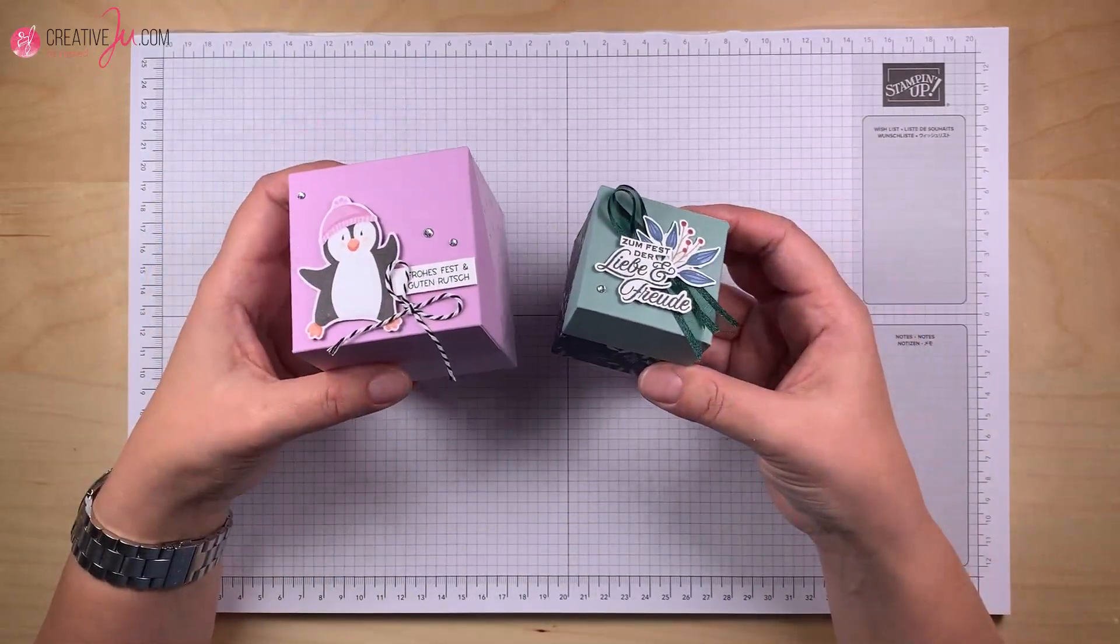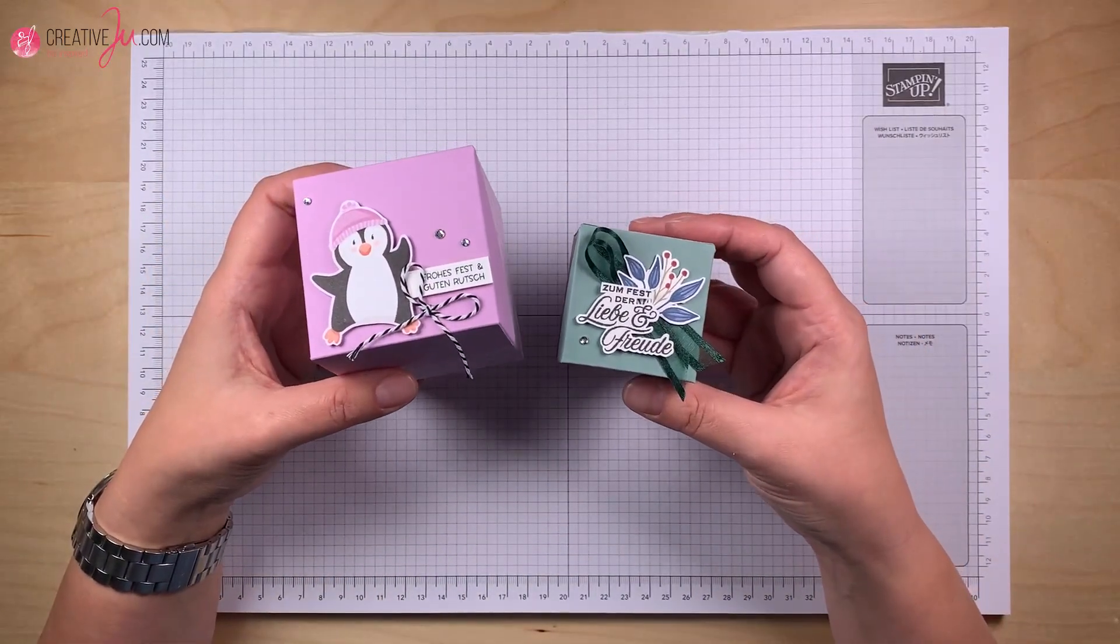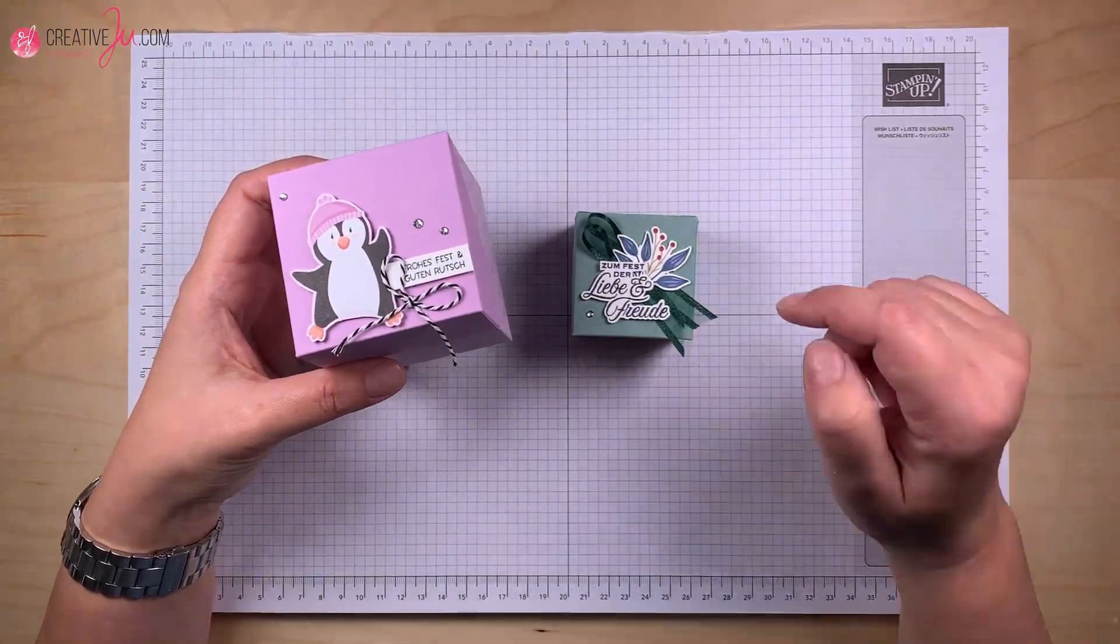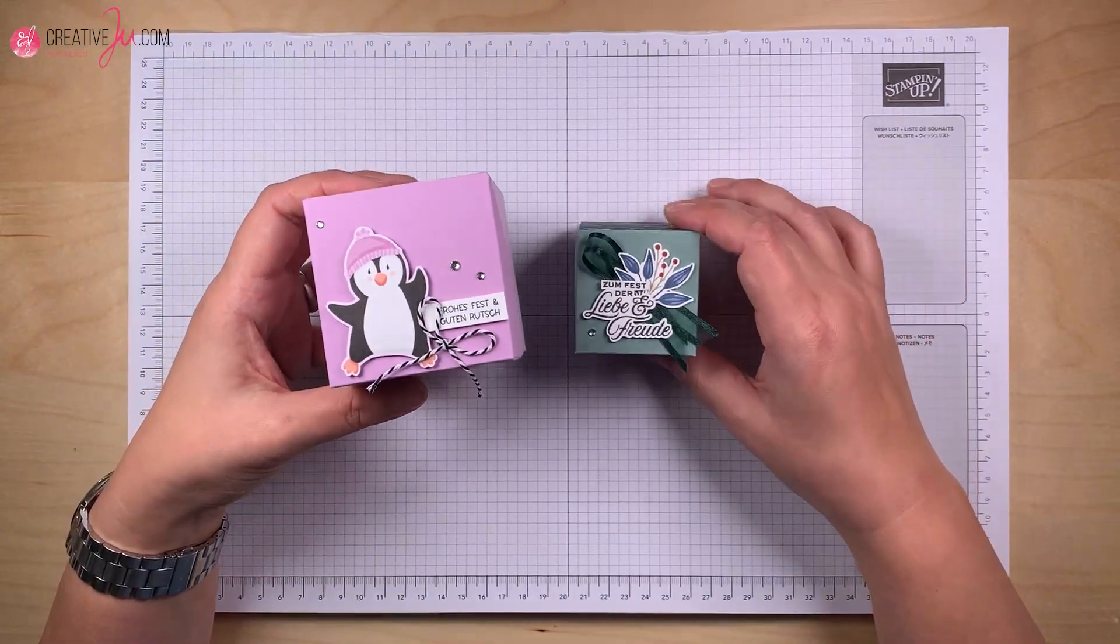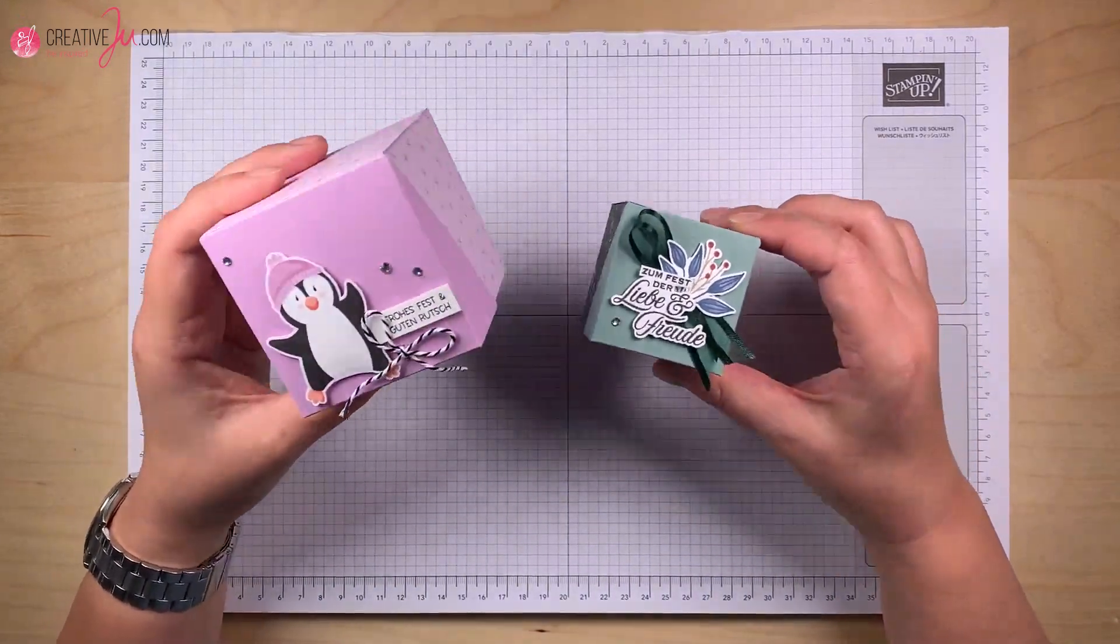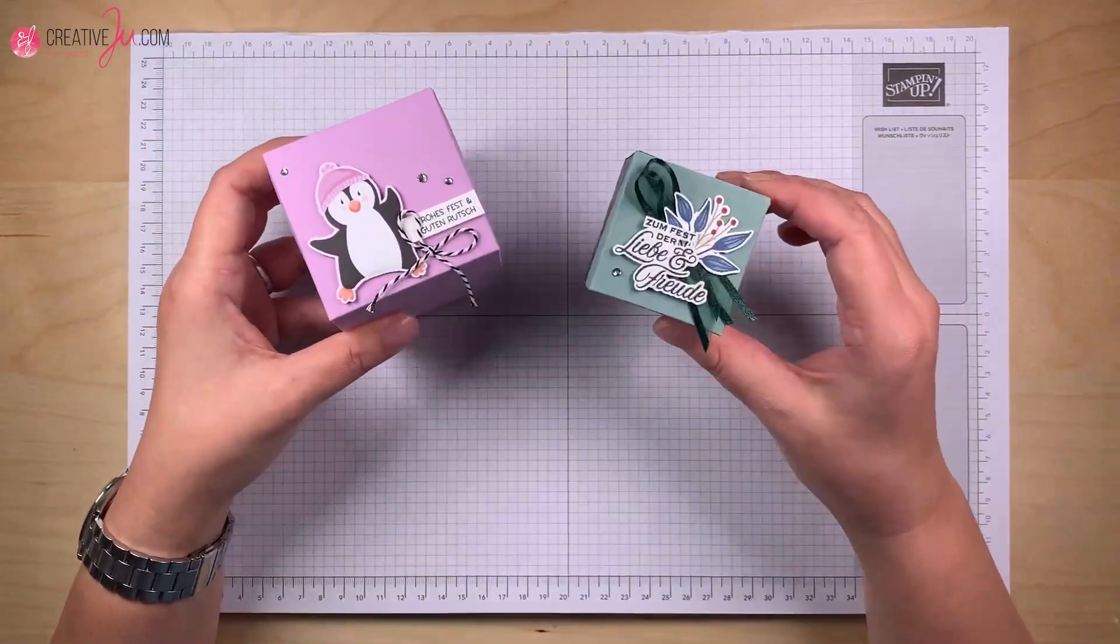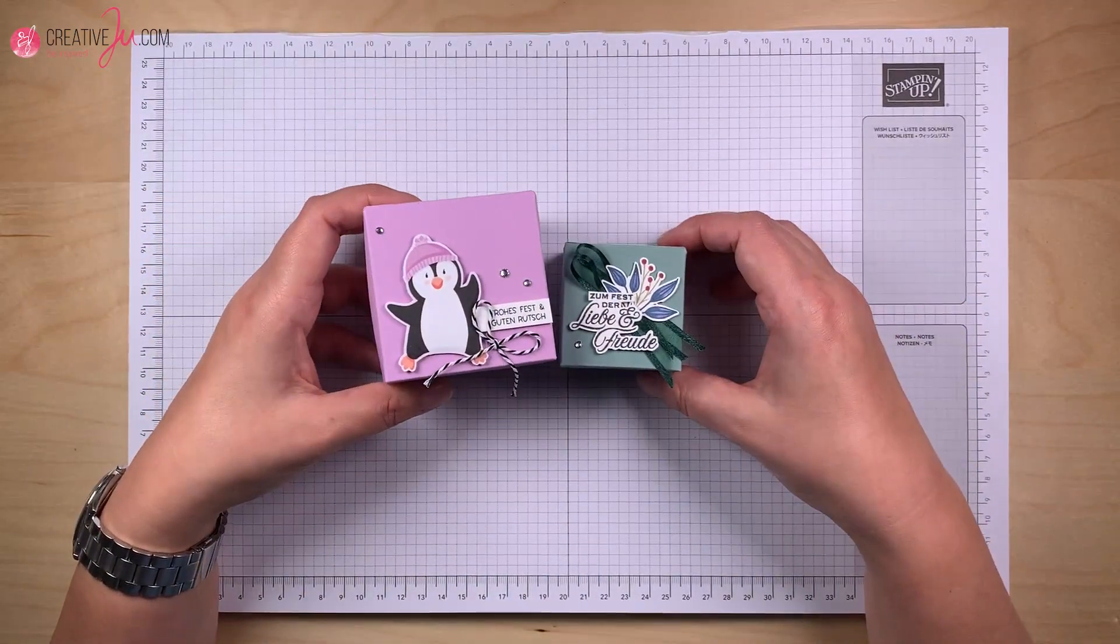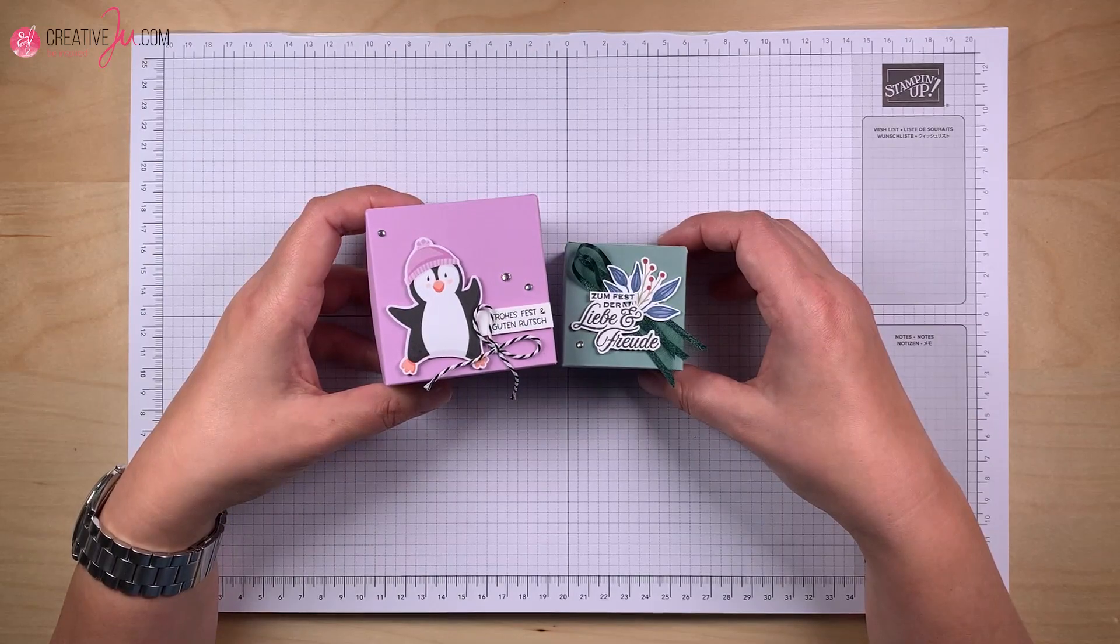Die Maße für alle Größen, die ich heute zeige, stelle ich auf meinem Blog bereit. Also da findet ihr dann auch eine Skizze und die Verlinkung mache ich wie immer unten in der Infobox zum Video. Und das ist die große Box, das ist die mittlere. Und natürlich mache ich heute wieder eine Alternative. Und zwar mache ich eine ganz kleine Box mit schrägem Deckel.